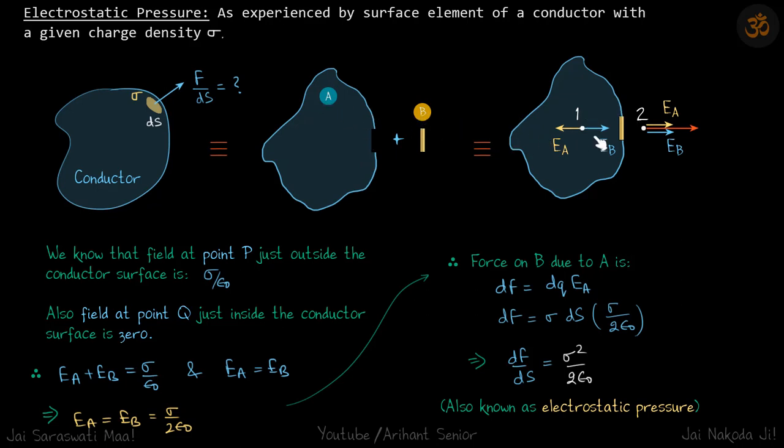Now let's write the electric field in the region because of each of them. Just outside, because of the element the field is E_A, and because of the rest of the conductor the field is E_B, giving net field E_net. Inside the conductor, the field from the rest is E_B and from the element is E_A but in the opposite direction.